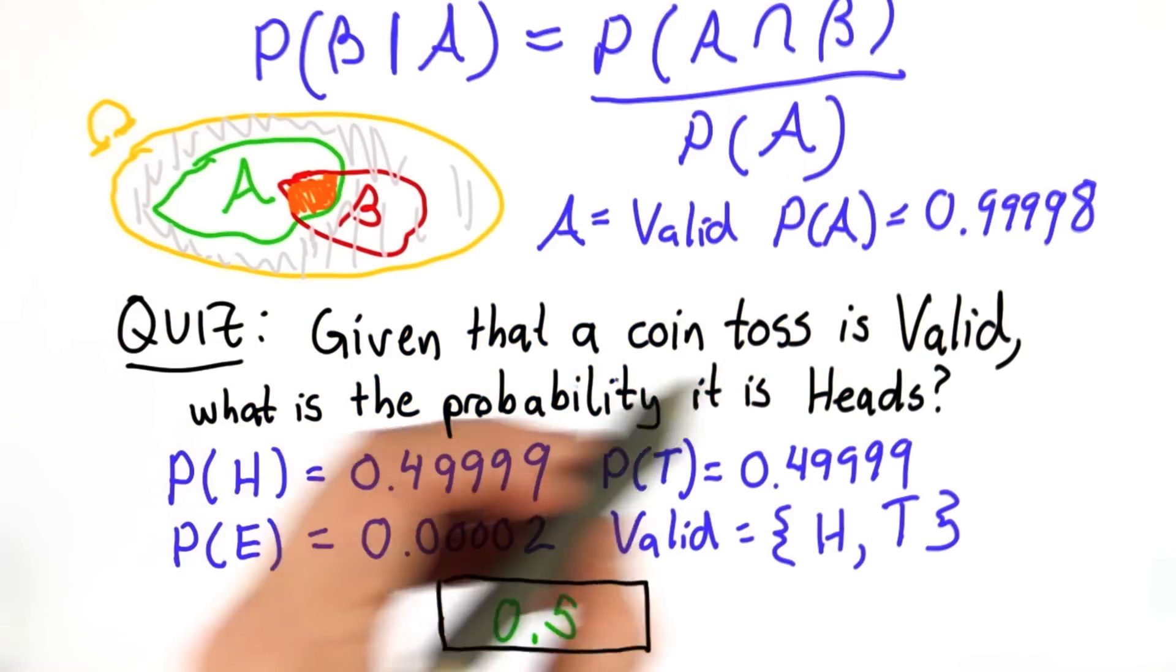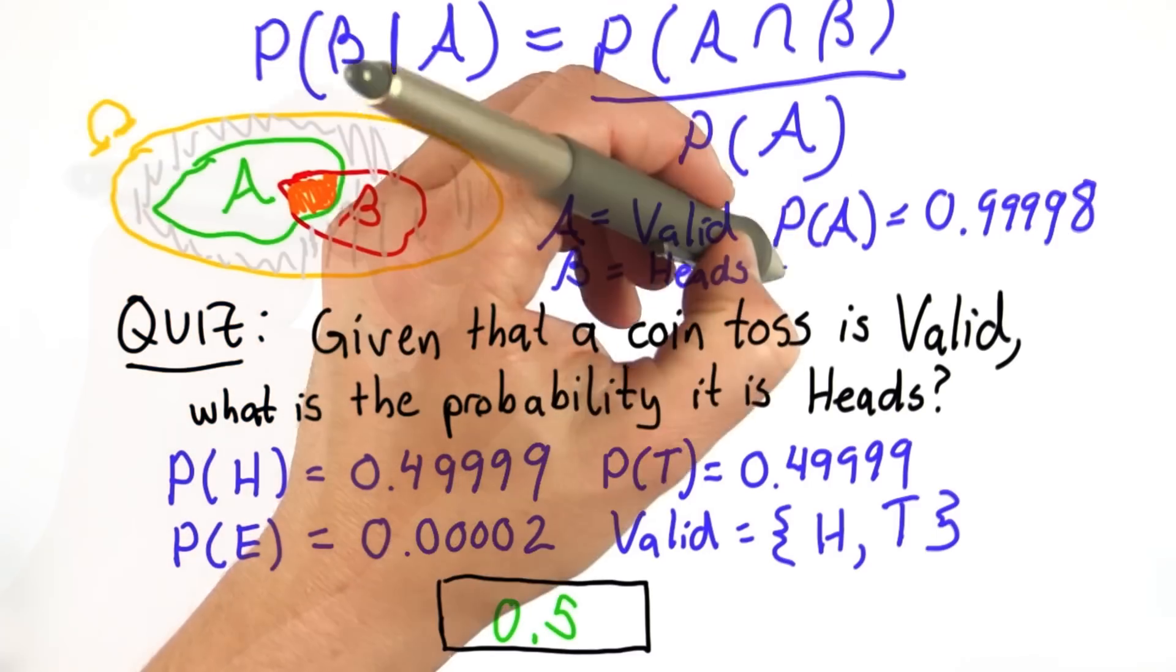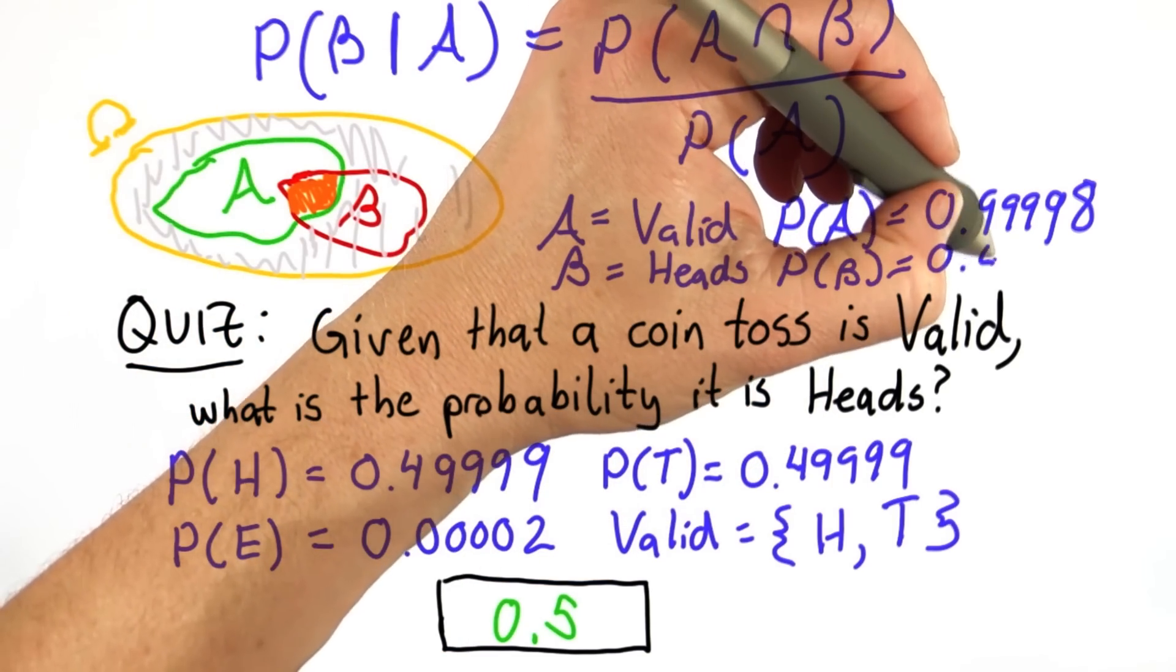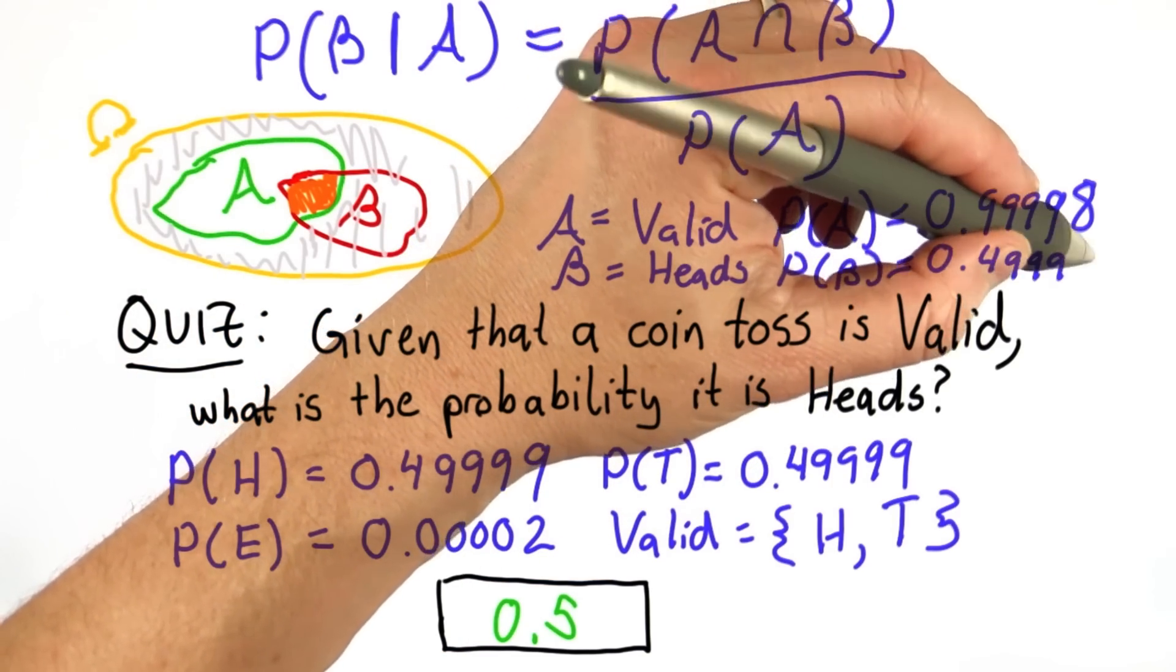What B is is the probability that it's heads. And so the probability of B is the probability of H, which is 0.49999.